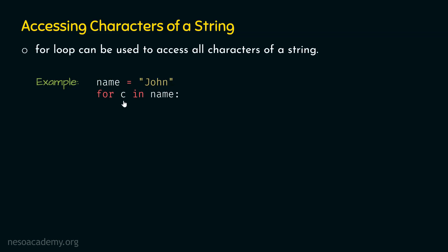So first, this variable c will receive character J, then O, then H, and then N. In this way, all the characters of this string are accessed. This means that the statements inside this for loop will be executed a total of four times, because this string has a total of four characters.